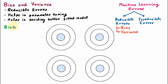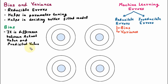Bias is the difference between the actual value and the predicted value. Using the machine learning model, we predict some value. Let us suppose that this inner circle represents the predicted value — the machine learning model says the value should be inside this circle. But in a real-time experiment, the value coming is far from that. The difference between the predicted value and the actual value is the bias.